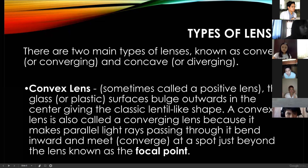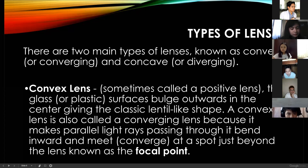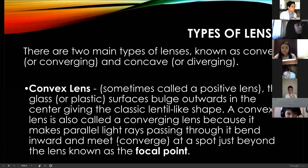Let's move now to the types of lenses. There are two main types: convex or converging, and concave or diverging. A convex lens is sometimes called a positive lens. The glass or plastic surface bulges outwards in the center, giving a classic lentil-like shape. A convex lens is also called a converging lens because it makes parallel light rays passing through it bend inwards to meet, or converge, at a point just beyond the lens known as the focal point.